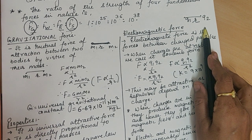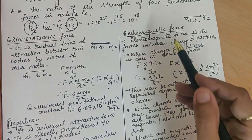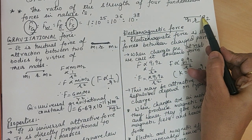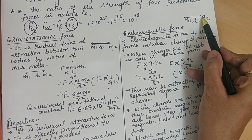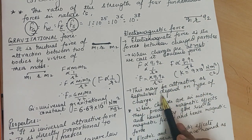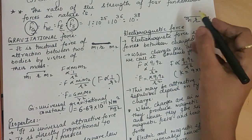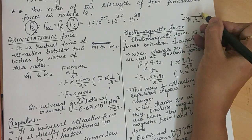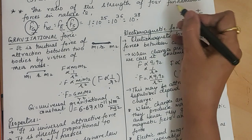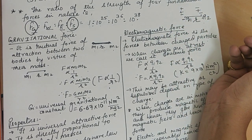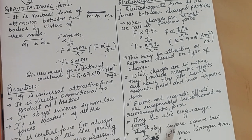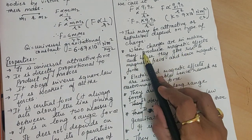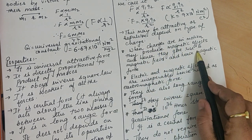If the charges are at rest, this force is called Coulomb force. If the charges are moving, it is called electromagnetic force, because moving charges produce a magnetic field. So remember: if charges are in static/rest condition, it is electrostatic (Coulomb) force. This force may be attractive or repulsive depending on the type of charges — opposite charges attract, like charges repel.